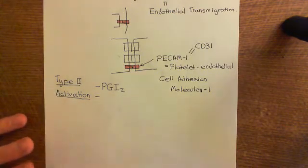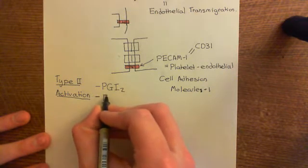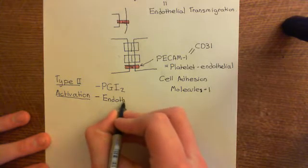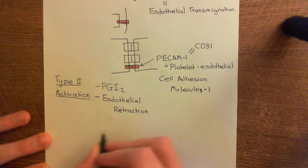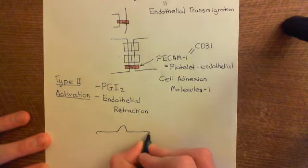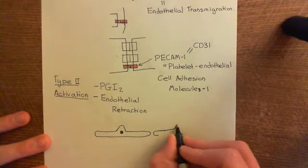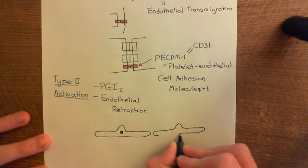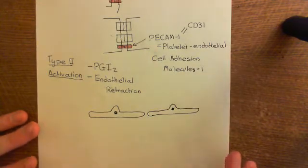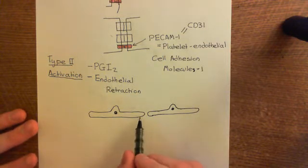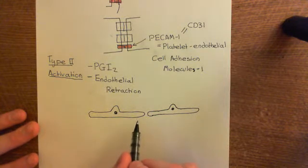You're also going to open up gaps between endothelial cells in a more permanent way than in type 1 activation — essentially endothelial retraction. If we draw two neighbouring endothelial cells, they maintain their shape because they have a very dense cytoskeletal network made of actin and tubulin microfilaments. These filaments form a web throughout the cytoplasm of the cell, holding it in shape, with the endothelial cells sitting on a basement membrane.